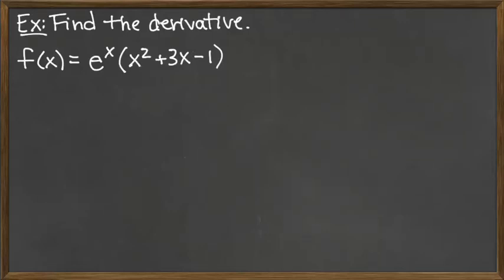To take the derivative of the function e to the x times the factor x squared plus 3x minus 1, we're going to need to use a product rule.